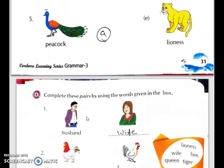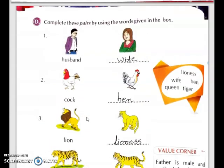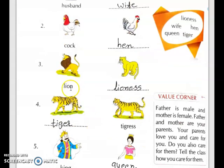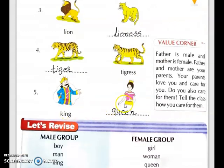On the next page we will complete these pairs by using the words given in the box. One word is given and the other we have to write. Husband — the female name is wife. Cock — the answer is hen. Lion — lioness. Tiger — tigress. King — queen. These are the male and female nouns and all of you know about them — you have to remember these male and female nouns.